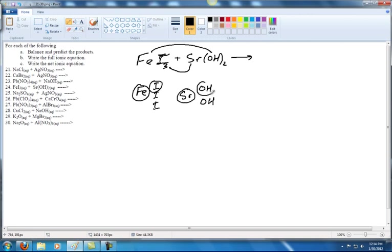And remember that we just want one of each of these. So we'll take the Fe, the I, the Sr and the OH. And the Fe will join with the OH and the Sr will join with the I.